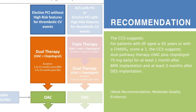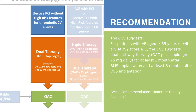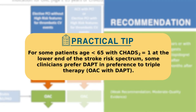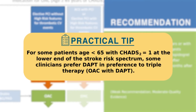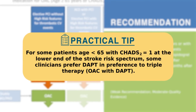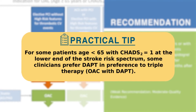For patients with AF undergoing elective PCI without high-risk features for thrombotic events, the CCS suggests dual pathway therapy consisting of OAC plus clopidogrel 75 milligrams daily for at least one month after bare metal stent implantation and at least three months after drug-eluting stent implantation. For some patients younger than 65 with a CHADS2 score of 1 at the lower end of the stroke risk spectrum, some clinicians may prefer dual antiplatelet therapy instead of triple therapy consisting of OAC plus dual antiplatelet therapy.